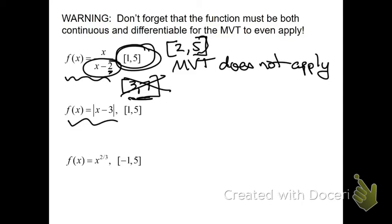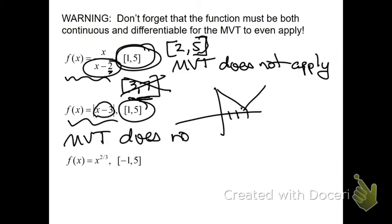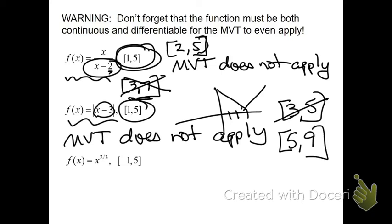So, when x is 3, there's a sharp point. This graph would be a v that looks like this. So, is that sharp point within this interval? Yes, it is. Therefore, mean value theorem does not apply again. They're trying to trick you. If the 3, however, was the endpoint, you could still proceed. And, if the 3 wasn't even involved in the interval, and we went from, say, 5 to 9, you could also proceed.